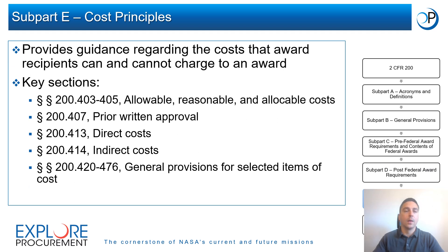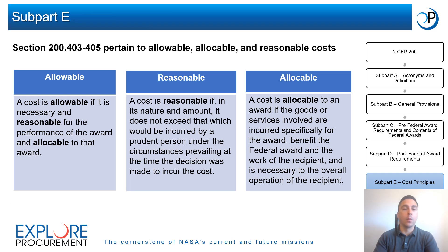Subpart E of 2 CFR 200, titled Cost Principles, provides guidance regarding the costs that award recipients can and cannot charge to an award. Costs charged to a federal award must be allowable, reasonable, and allocable. A cost is allowable if it is necessary and reasonable for performance of the award, allocable to that award, and conforms to applicable requirements. A cost is reasonable if it does not exceed what a prudent person would incur under the circumstances. A cost is allocable if the goods or services are incurred specifically for the award and benefit the federal award.